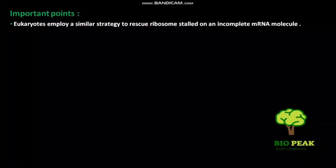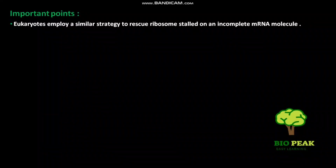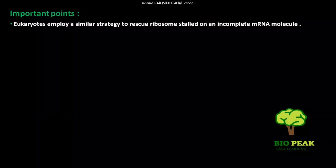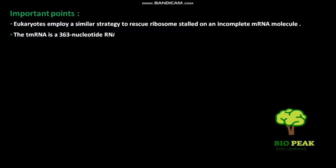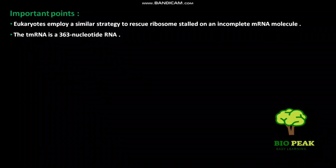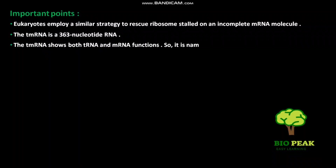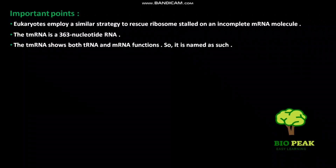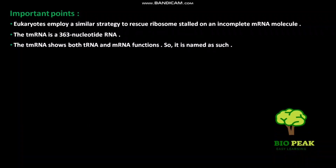Eukaryotes employ a similar strategy to rescue ribosomes stalled on an incomplete mRNA molecule. The tmRNA is a 363-nucleotide RNA. The tmRNA shows both tRNA and mRNA functions, so it is named as such.